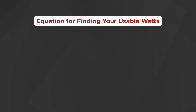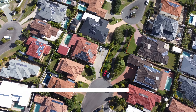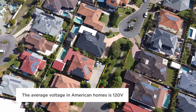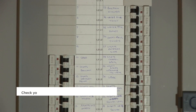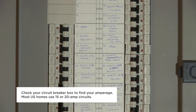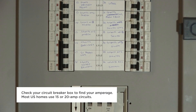This first equation will help you determine how many usable watts you have. That equation is: voltage times amperage equals total watts, times 0.8 equals the usable watts. The average voltage in American homes is 120 volts. To find your amperage, you will have to check your circuit breaker box. Most U.S. homes use 15 or 20 amp circuits.